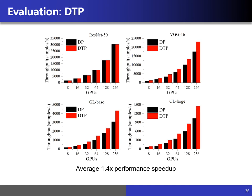Compared with data parallelism, the contribution of DTP on performance improvement is slight for the ResNet-50 model, while DTP achieved an average 1.4x performance speedup for VGG-16, GL-BIS, and GL-Large models respectively. The main reason is that ResNet-50 is a convolution-dominated network which prefers data parallelism.